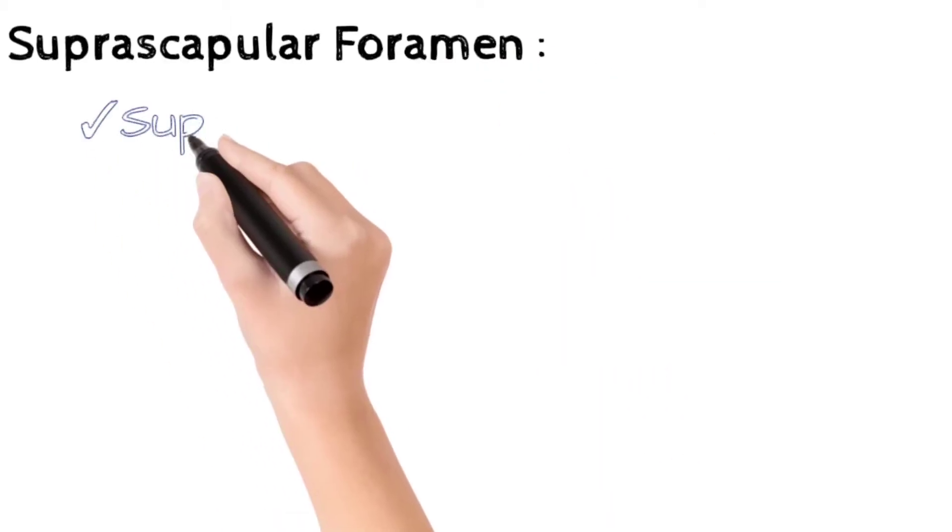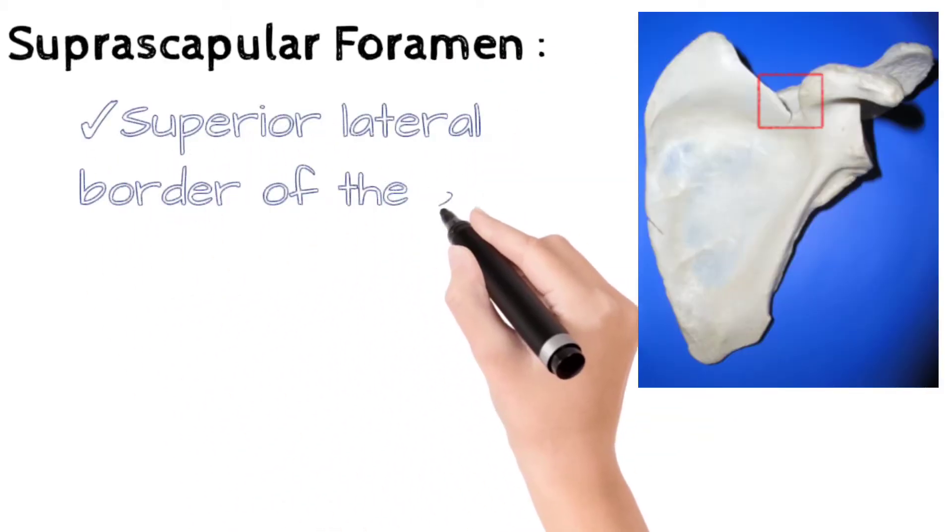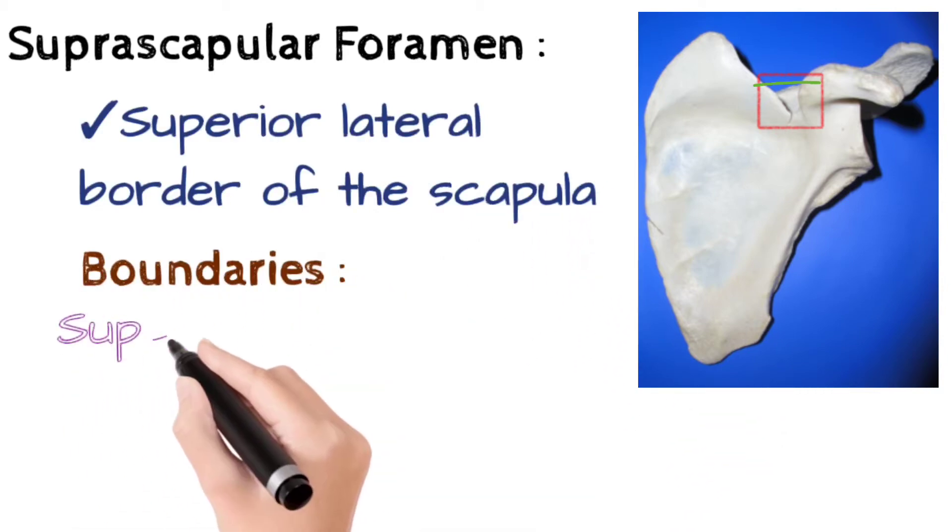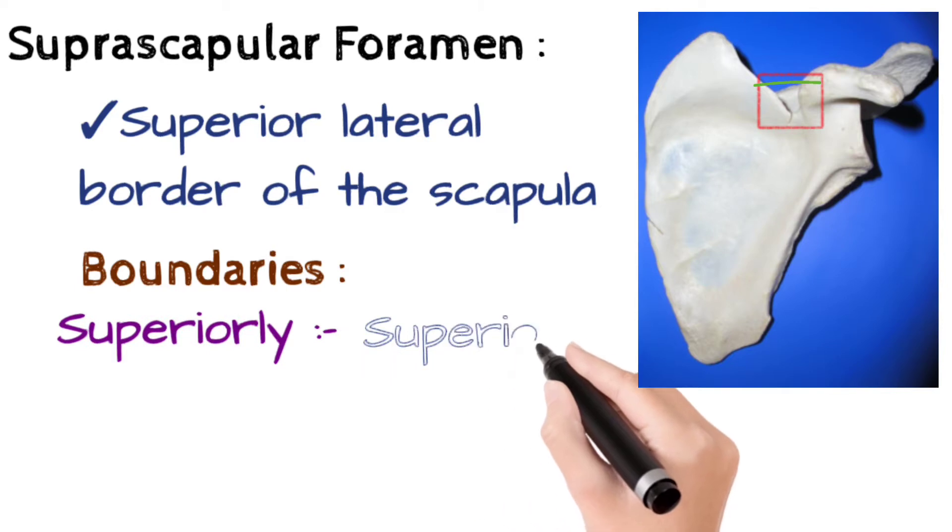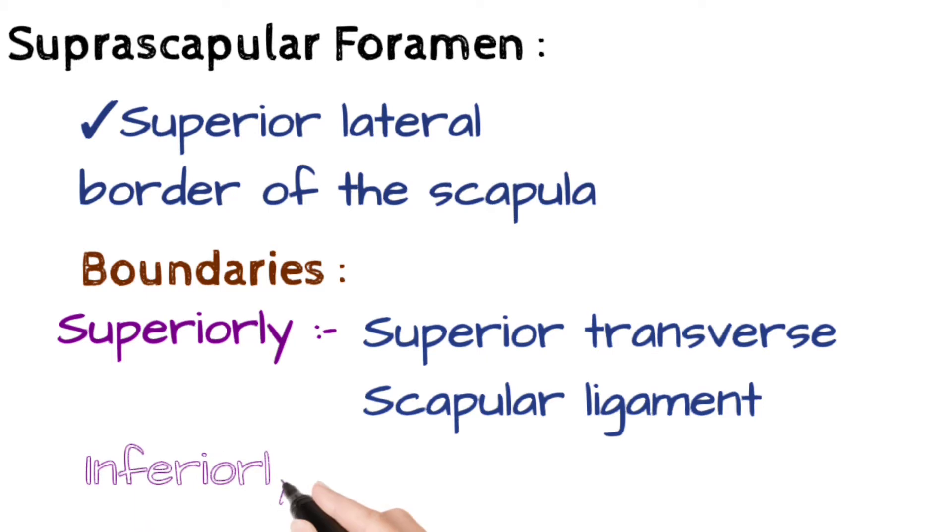Suprascapular foramen is located at the superior lateral border of the scapula. Boundaries: Superiorly, superior transverse scapular ligament. Inferiorly, suprascapular notch.